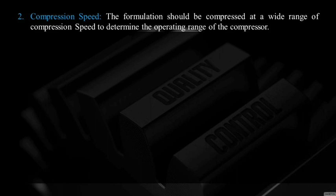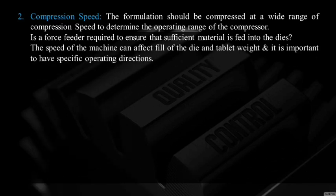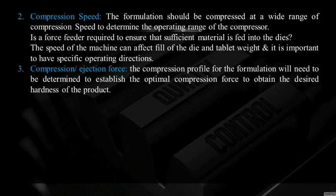Compression speed — the formulation should be compressed at a wide range of compression speeds to determine the operating range of the compressor. During validation, the range of compression speed is established and must be followed during manufacturing. If compression speed is high, a force feeder is required to ensure that sufficient material is fed into the dies. The speed of the machine can affect fill of the die and tablet weight, so it is important to have specific operating directions.